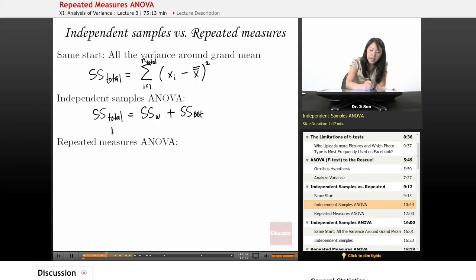And because of that, the F statistic here becomes the variance between over the variance within. And obviously each of these variances correspond to its own sum of squares.